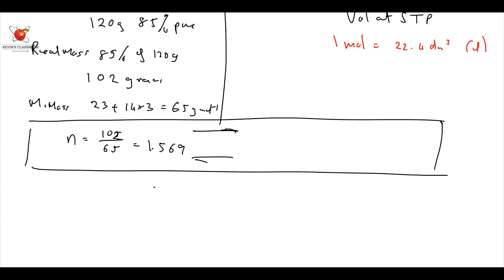The recipe is 2 goes to 3. So therefore, how many moles of that? I'm going to have to take 1.569 divided by 2, times it by 3, which gives me the number of moles of this, which is 2.358 moles. That's the ratio.